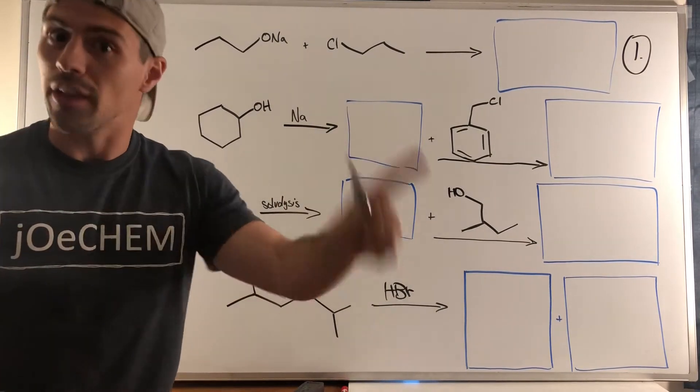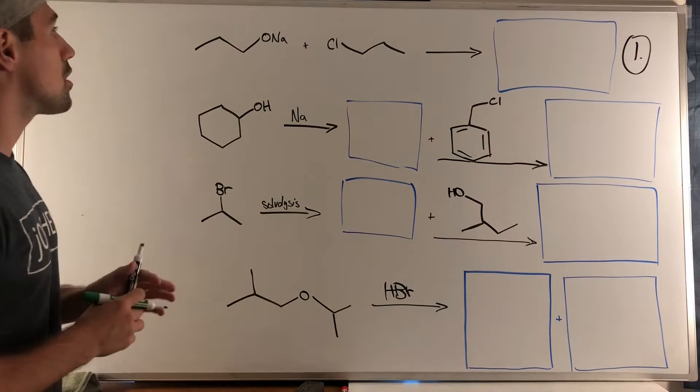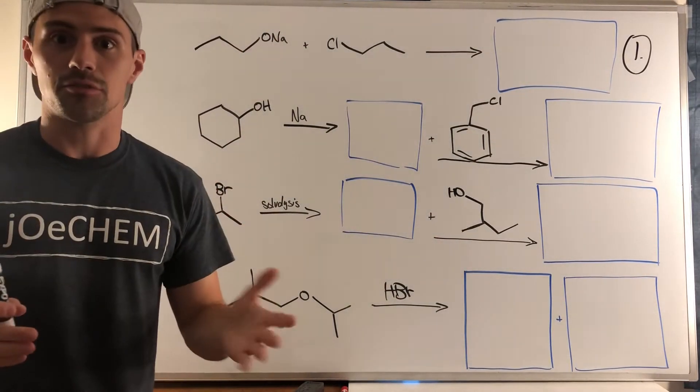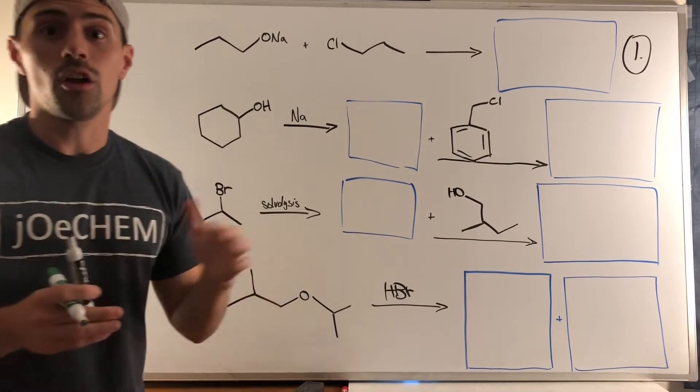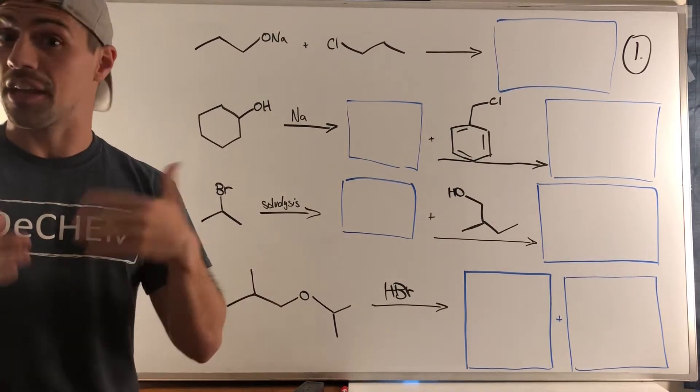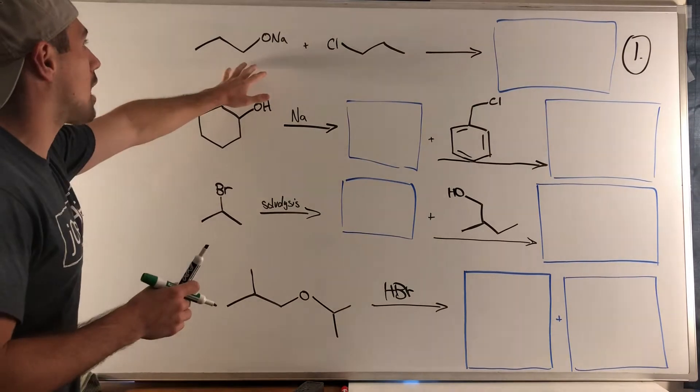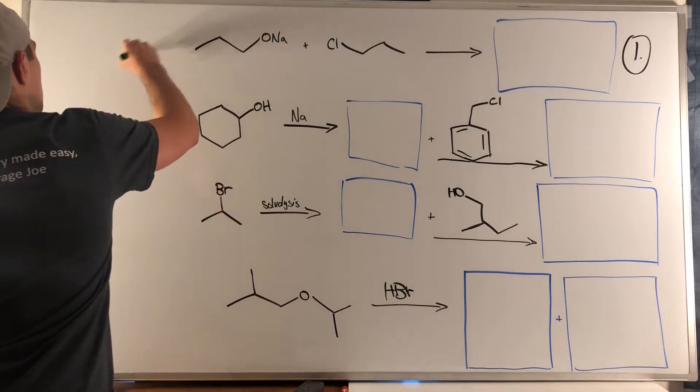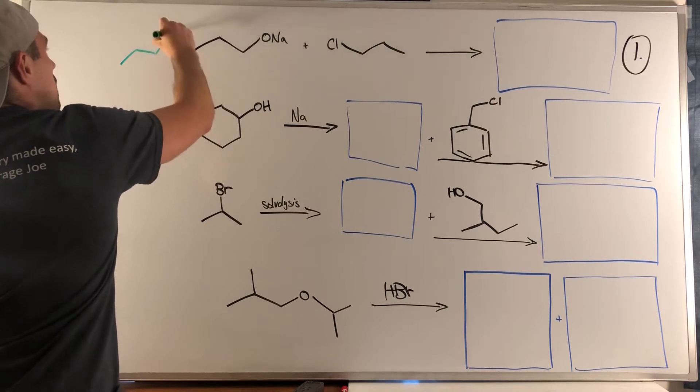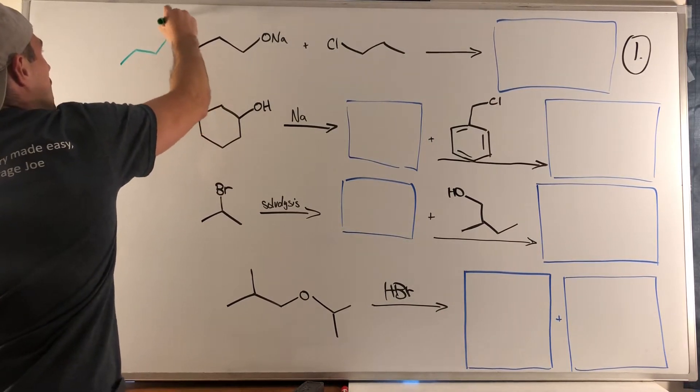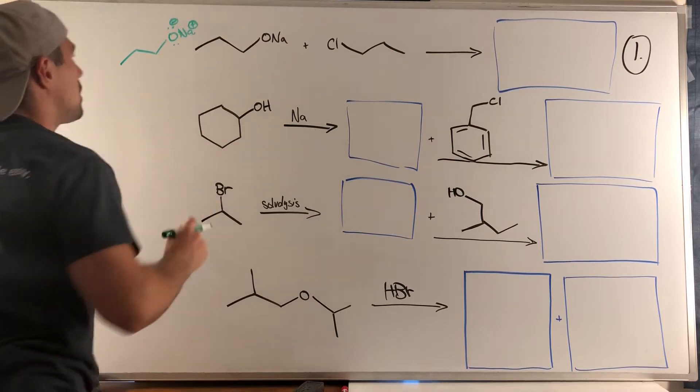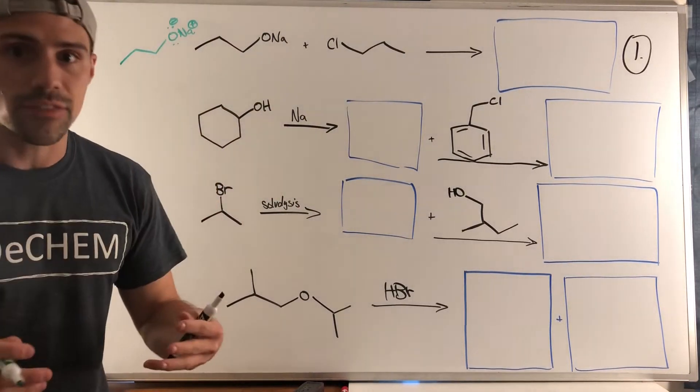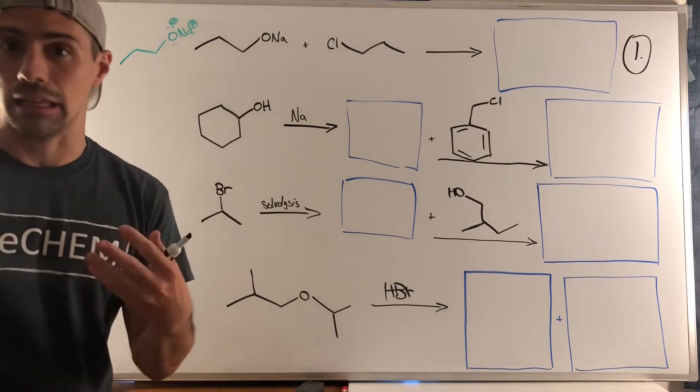In this example up top, remember for ether synthesis we can take the SN2 route or we can go an SN1 route. If we look up here, I think you're seeing we have an alkoxide—this is O minus and a plus—so we have a good nucleophile and you can see we have a primary substrate, good leaving group. This is an SN2 pathway, and we're making an ether.